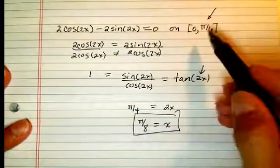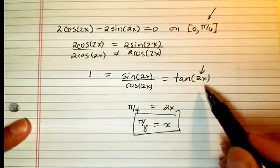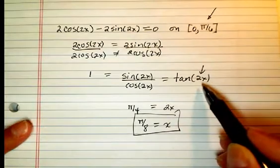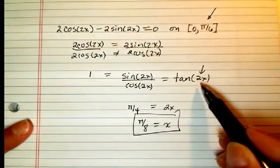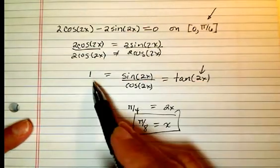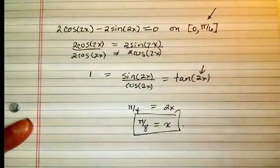So, x equals pi over 8 is on my interval, and it is such that tangent of 2 times pi over 8 is tangent of pi over 4, which is indeed 1. So, there's our solution.